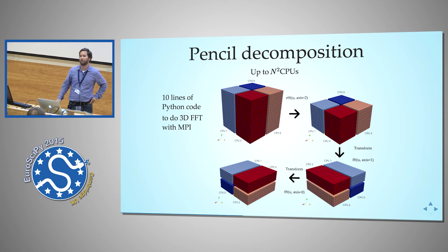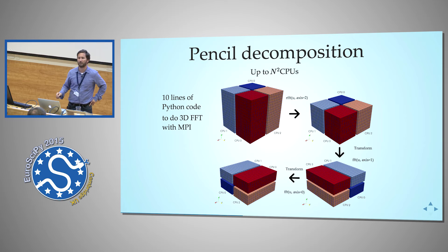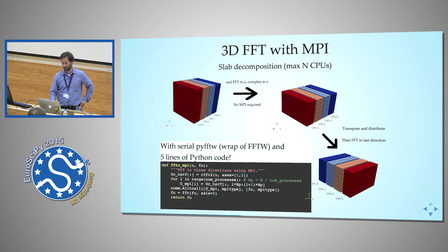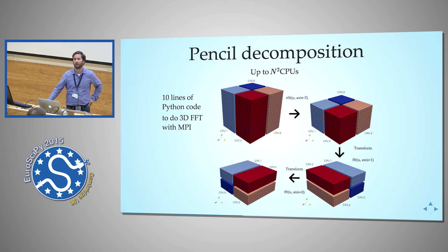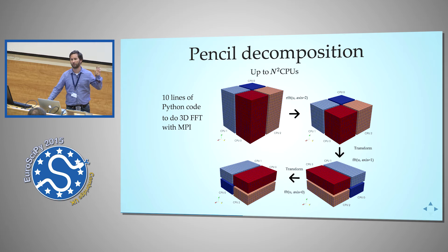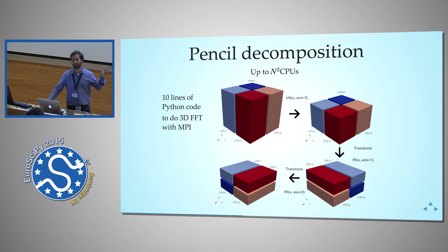The other way to decompose the mesh is called pencil decomposition — the first one was slab decomposition. Pencil decomposition is slightly more complicated, but you can use it for a much higher number of processors. If you want to run a simulation on a hundred thousand CPUs, you have to use pencil decomposition; you cannot use slab. This takes about ten lines of code — nothing more to it.